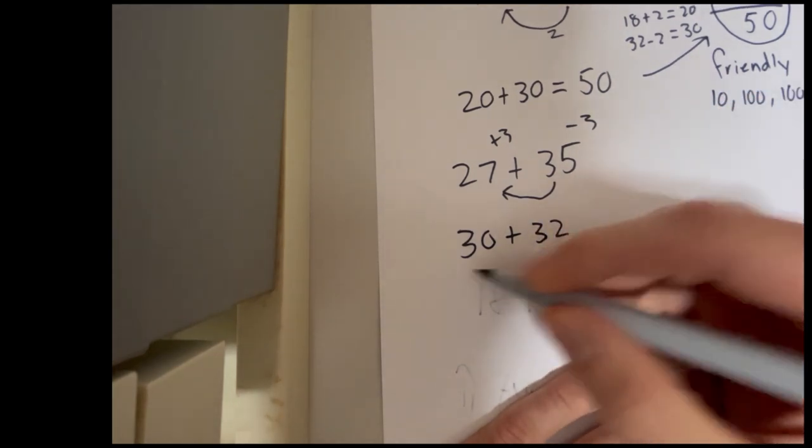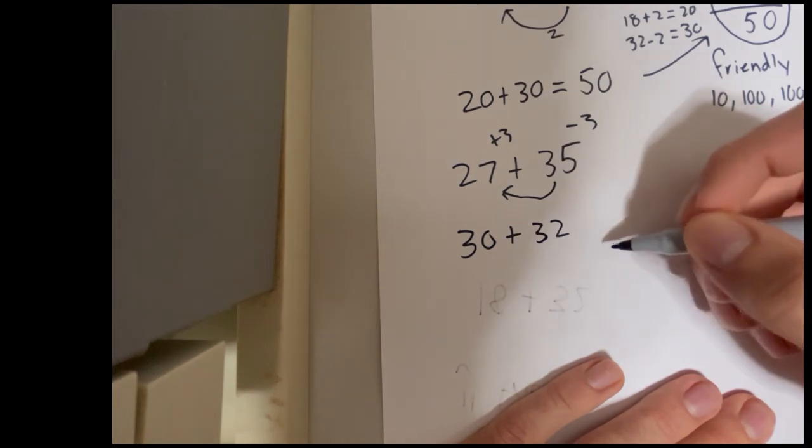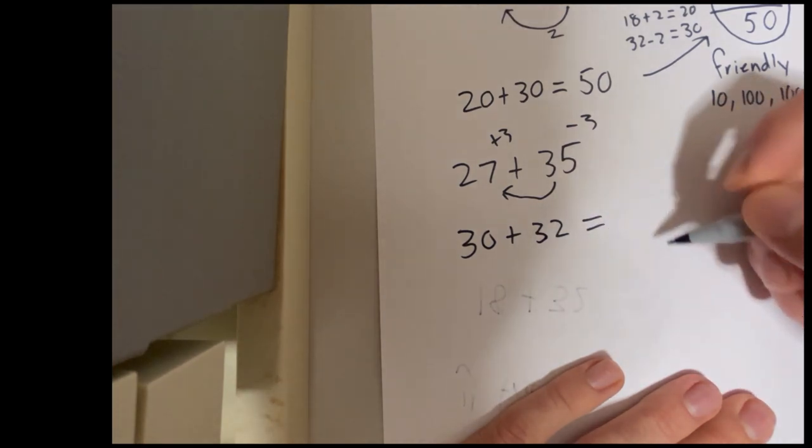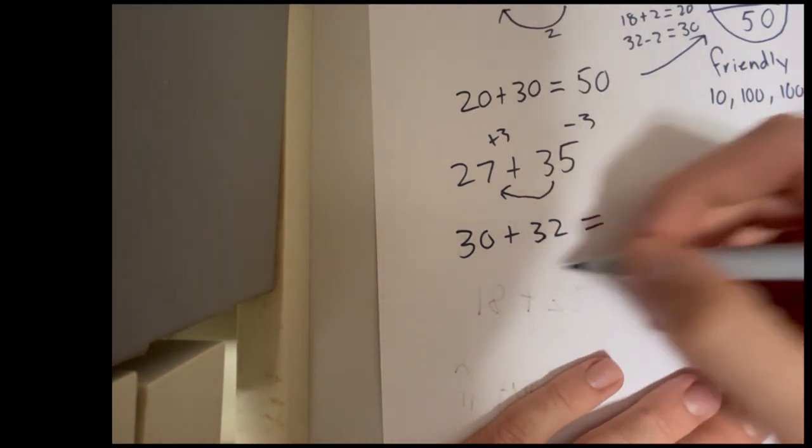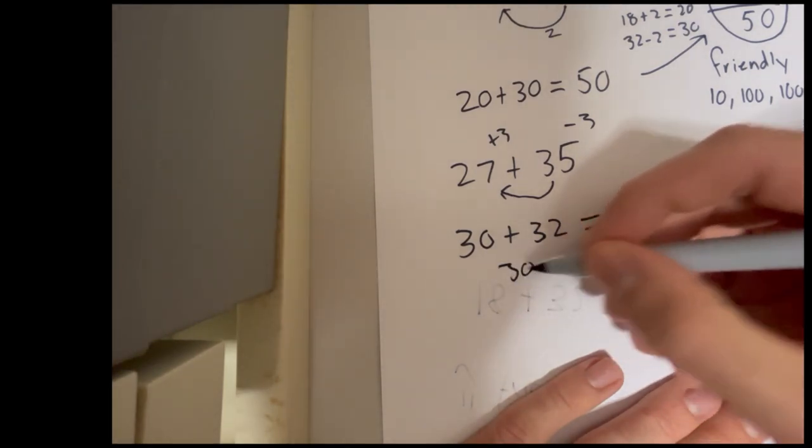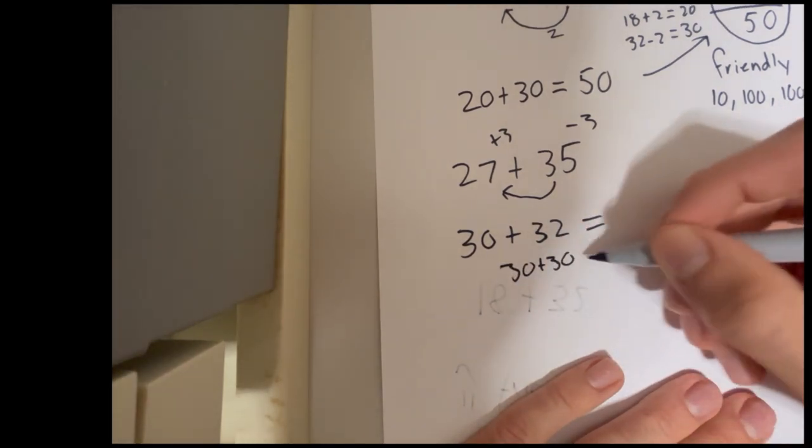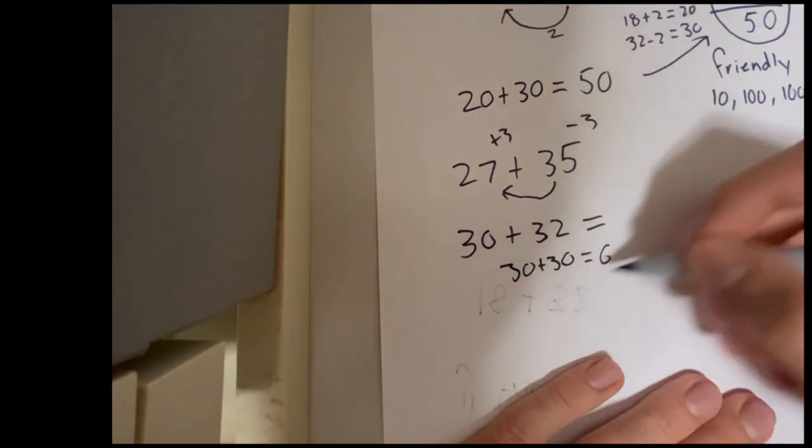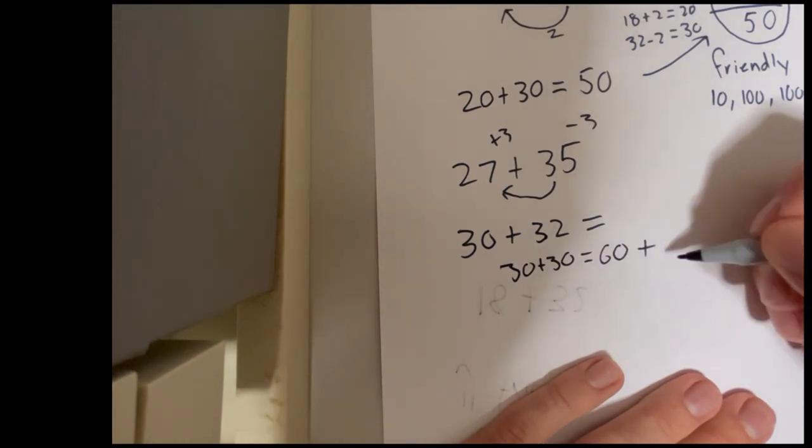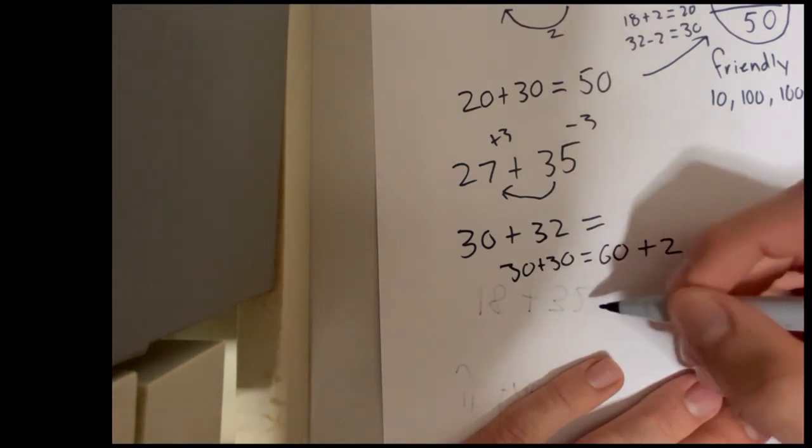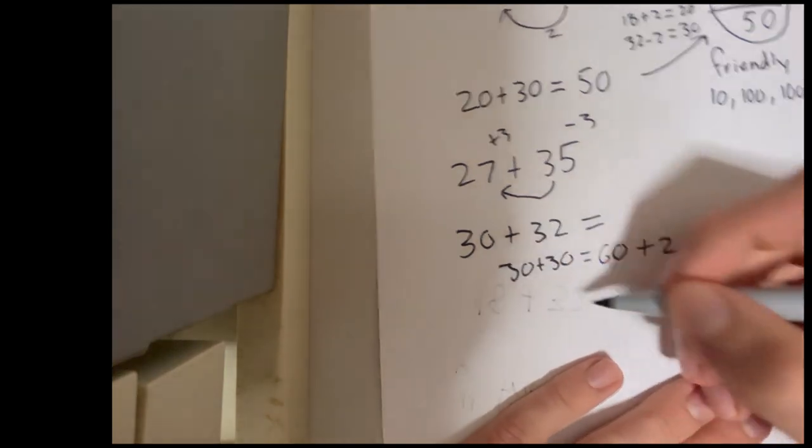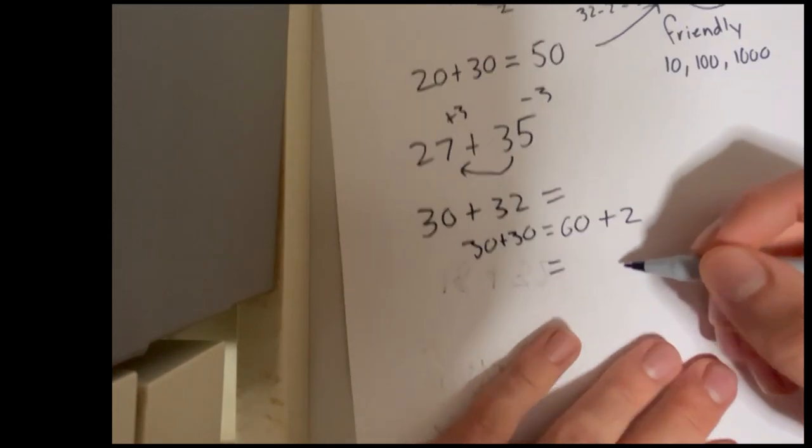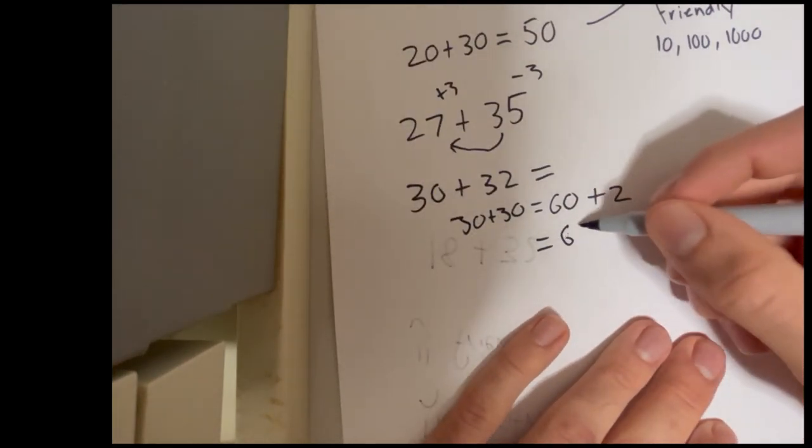And we know that 30 plus 30 equals 60, and then we have to add the 2. So 30 plus 30 equals 60, and then we have to plus the 2. And then we end up with our answer, which equals 62.